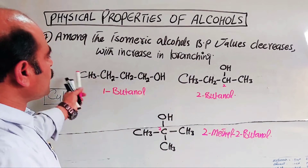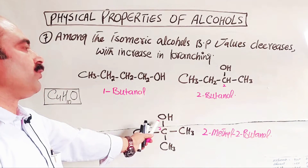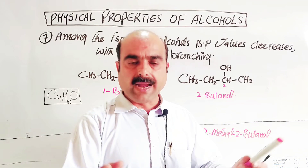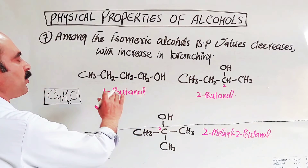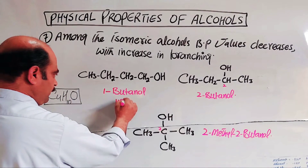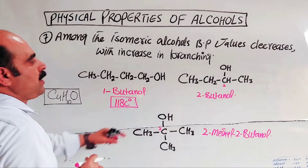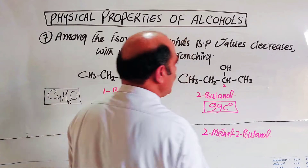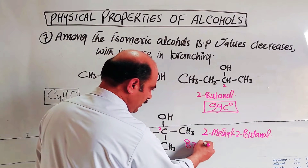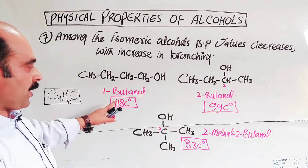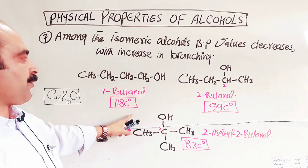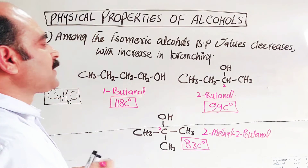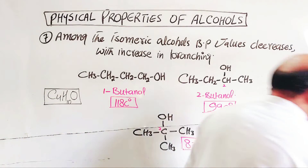One of these has a straight linear structure while the others have branches. With more branching, the surface area decreases, the intermolecular attractive forces become weaker, and the boiling point values decrease. 1-butanol has a boiling point of 180°C, 2-butanol is 99°C, and 2-methyl-2-propanol is 83°C.